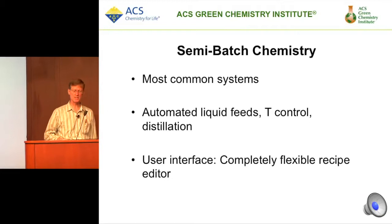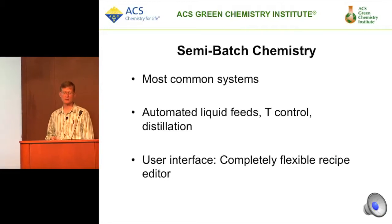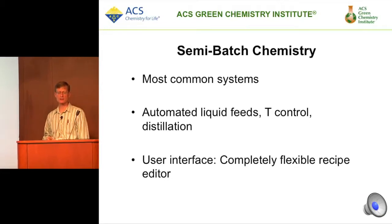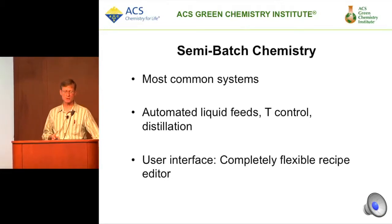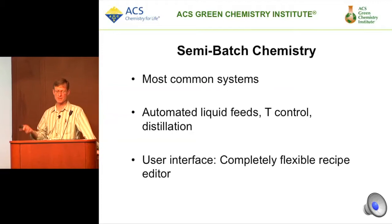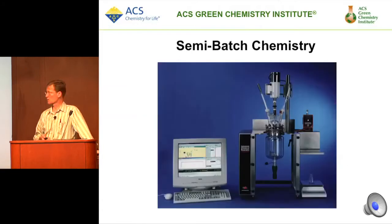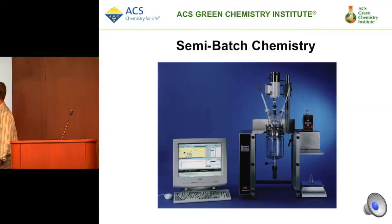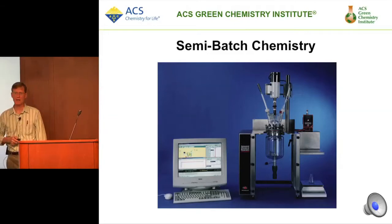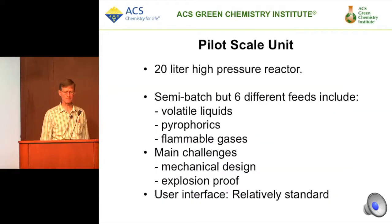Semi-batch chemistry is most common. Industrially, automated liquid feeds and temperature control are standard. Distillation overhead columns are usually part of the reactor and are used quite a bit. You can set that up in the lab too. In industry you'll see these kinds of setups quite a bit. Moving to pilot scale means scaling up to maybe a 20-liter reactor, which brings more design challenges.